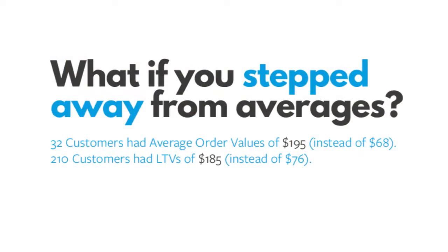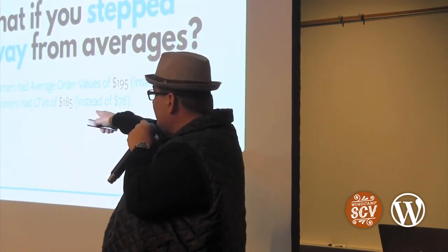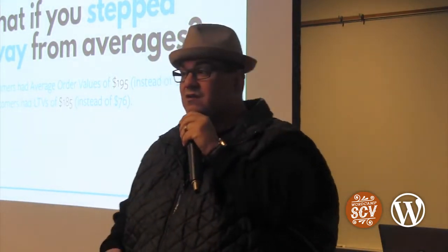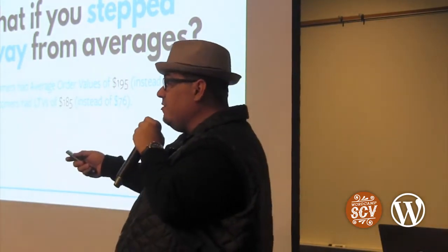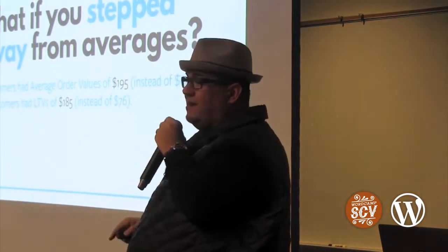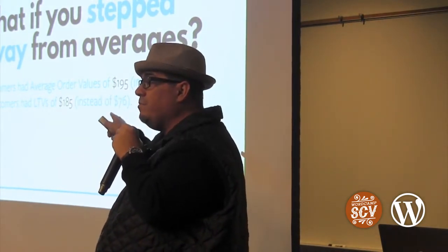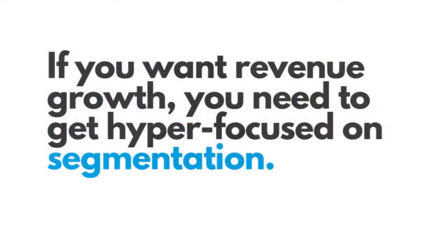What if you step away from averages? That store had an average order value of $68, but 32 customers had an AOV of $195. The same thing happened with LTV — lifetime value. 210 customers had LTVs of $185 instead of $76. The trick in e-commerce is not to play the averages, but to find the pockets of people that are distinct enough that you can do something with. If you want to drive revenue growth, you need to focus on segmentation.